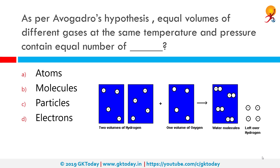As per Avogadro's hypothesis, equal volumes of different gases at the same temperature and pressure contain equal numbers of molecules. Avogadro's hypothesis states that two samples of gas of equal volume at the same temperature and pressure contain the same number of molecules. It allows chemists to predict the behavior of ideal gases. Amedeo Avogadro made this hypothesis in 1811 in an essay submitted to the Journal de Physique.